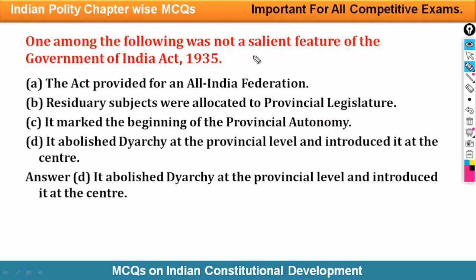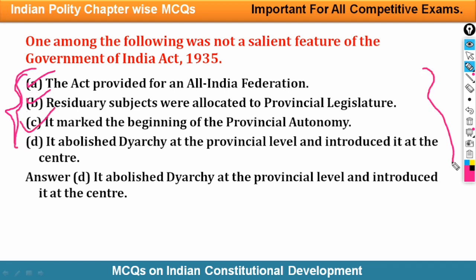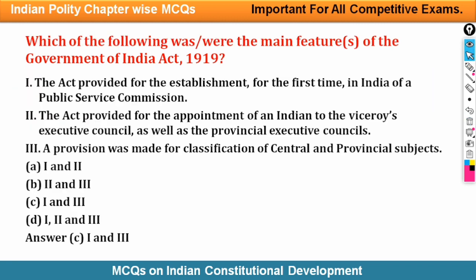So, if a question asks which of the following is a feature of the Government of India Act 1935, the correct answers would be options A, B, or C — covering All India Federation, residuary powers to provinces, and provincial autonomy.